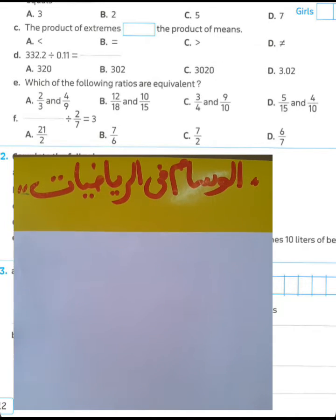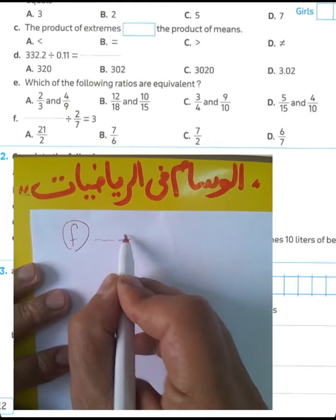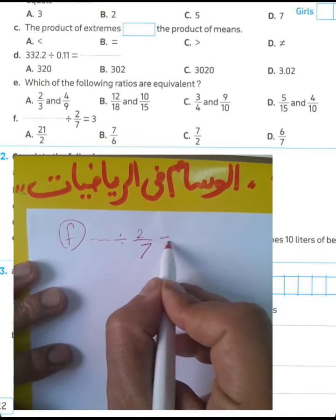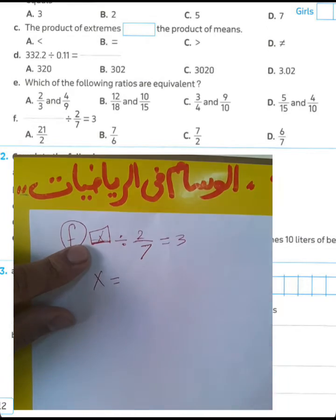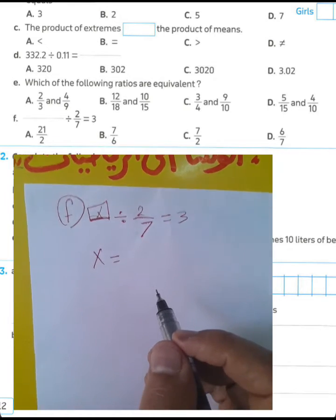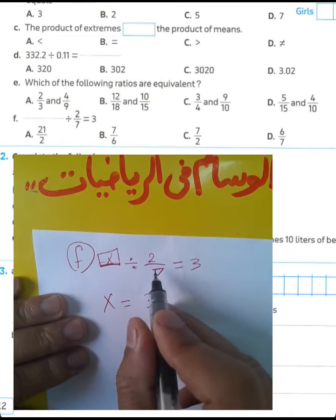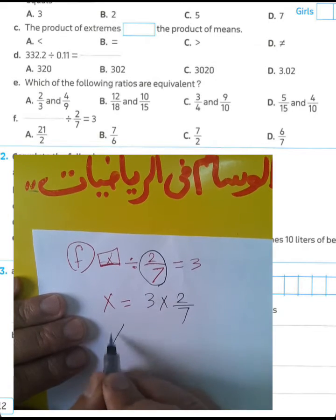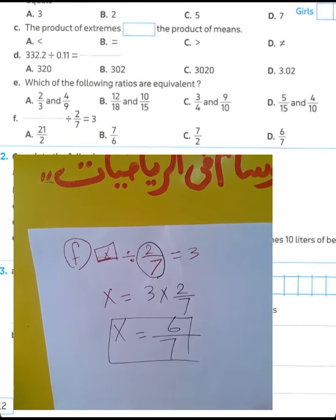Question letter F: find the dividend. The dividend equals the divisor multiplied by the quotient. We have blank divided by 2 over 7 equals 3. Let x equal the dividend. To find x, multiply the quotient by the divisor: 3 times 2 over 7 equals 6 over 7. Choose letter D.